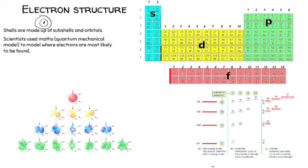These shells correspond to the rows of the periodic table. The first shell corresponds to the first row, the second shell to the second row, so all elements in the second row have two electron shells. Now, each of these seven shells — one through to seven on the periodic table — are made up of sub-shells and orbitals, which we'll talk about in a moment.